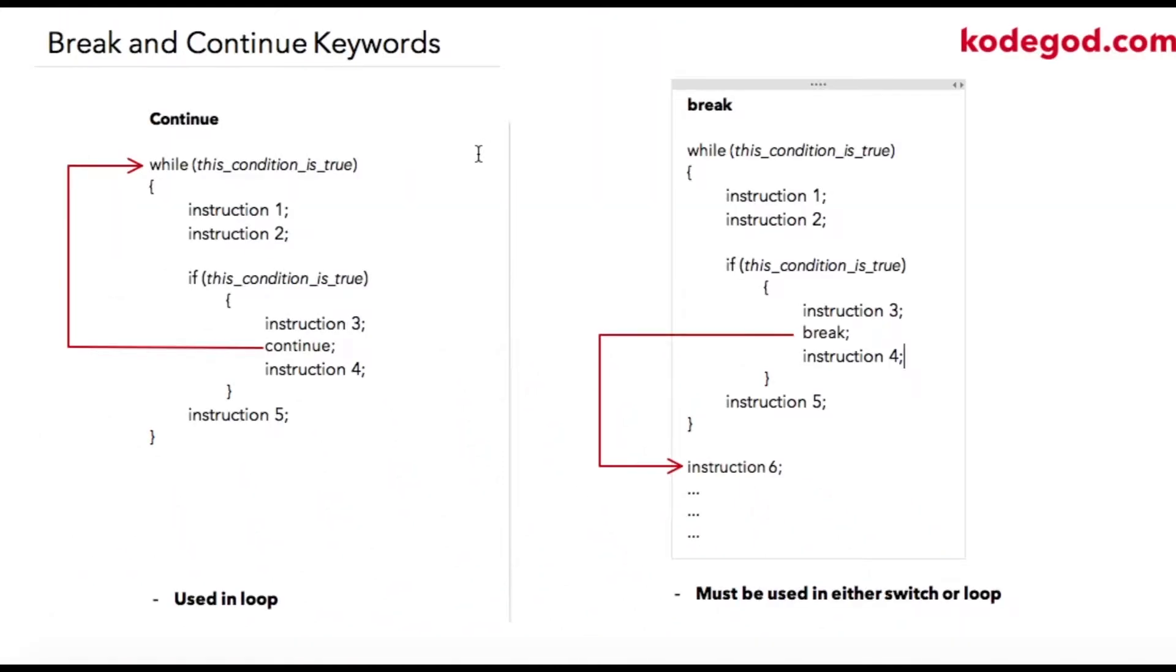In this lecture, we are going to learn about two important keywords used in C language: one is continue and the other is break. We are learning about this before switch case because break is a keyword that will be required in switch case.